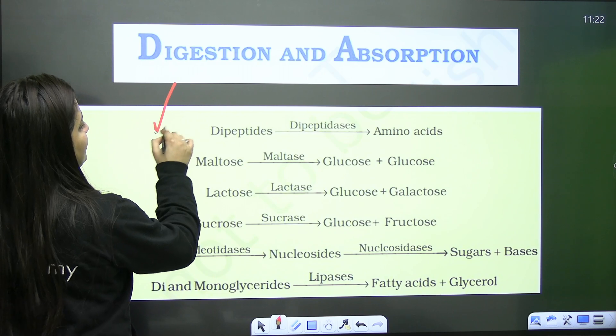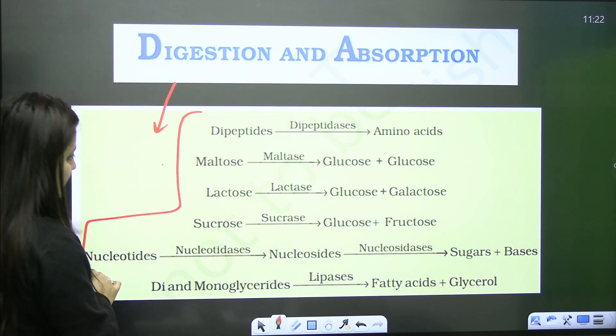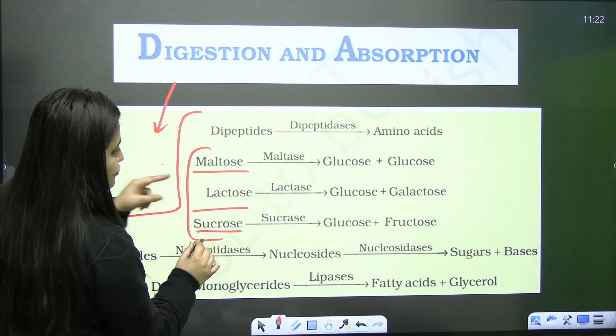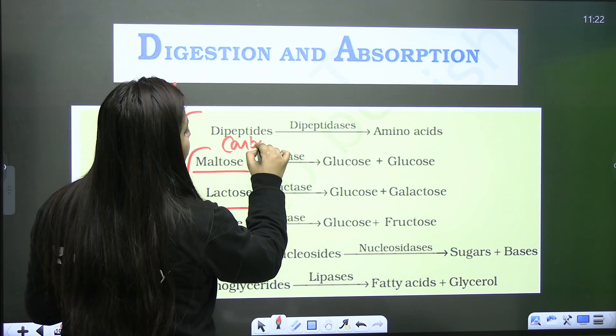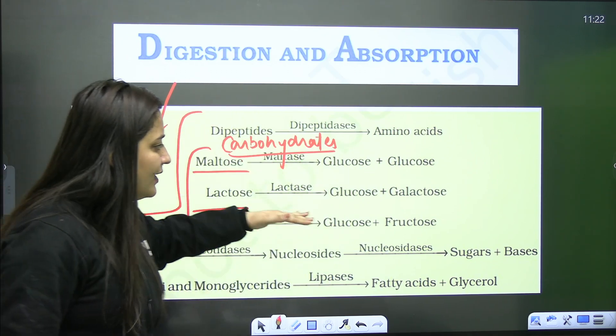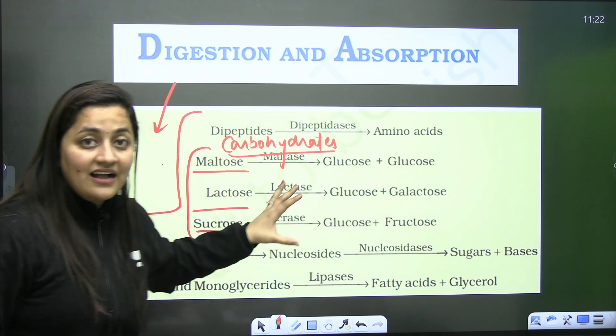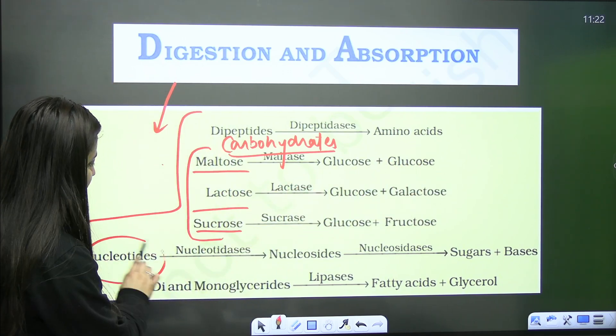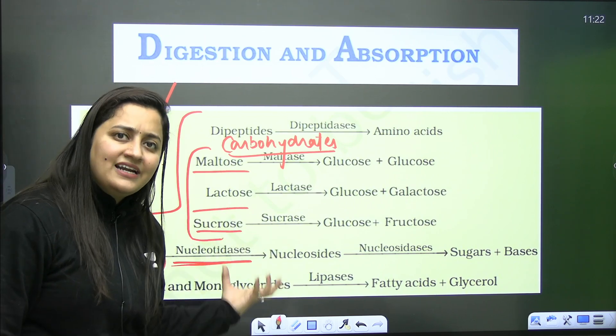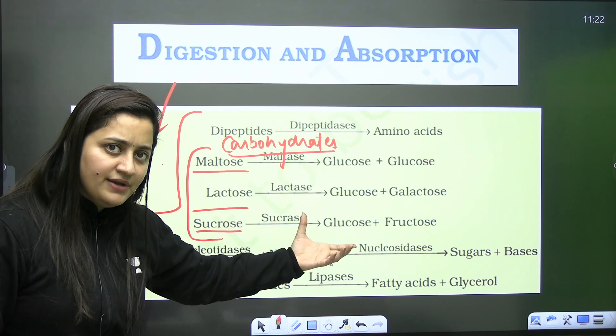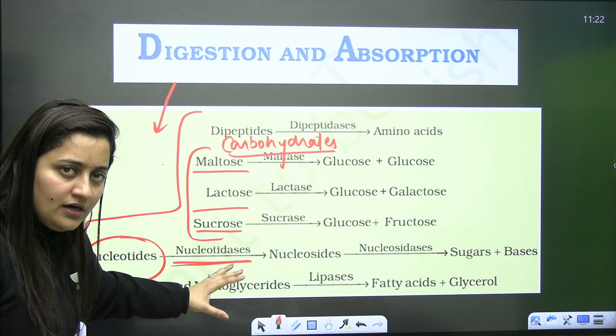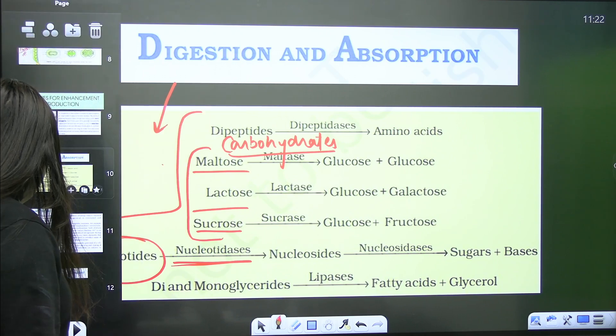Now let's come to the next chapter, digestion and absorption. You can see these reactions are given. When you see these examples—maltose, lactose, sucrose—they are also associated with biomolecules, with carbohydrates. Directly, indirectly, questions can come from this part, so you should not miss it. Nucleotides digested by nucleotidases—you know that nucleotides we study in biomolecule and molecular basis of inheritance. Again, you should complete this part from the deleted portion.